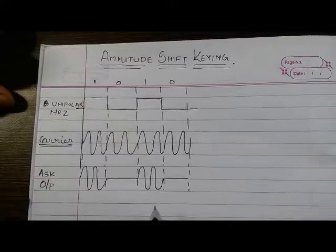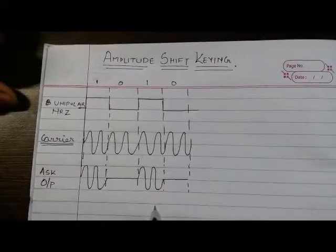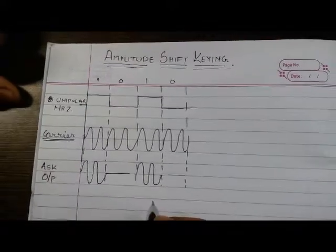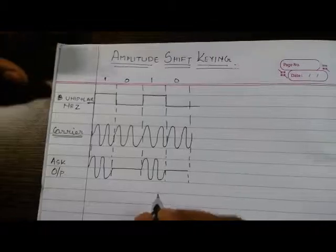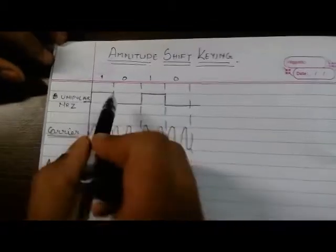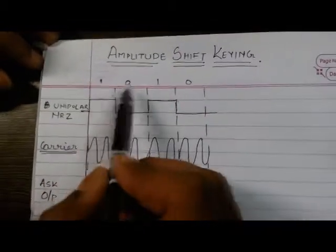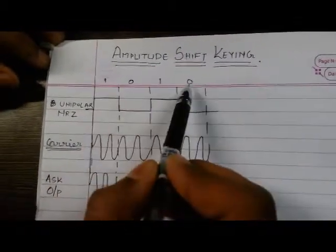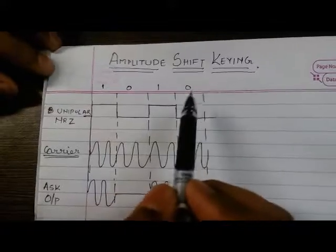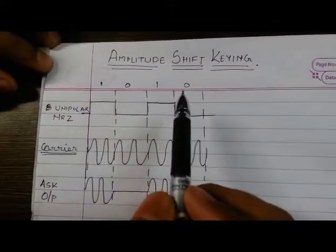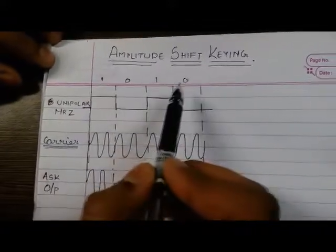Hello guys, we are performing an experiment on Amplitude Shift Keying. In order to perform the experiment, let us understand the concept first. Initially we want to transmit data 1 0 1 0, so we have a bit generator which will be generating this data.